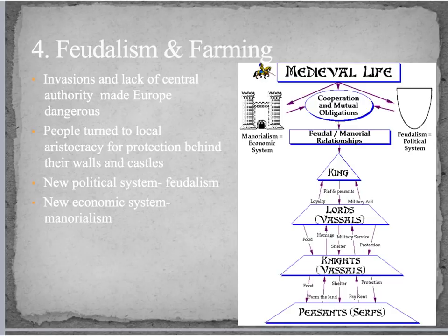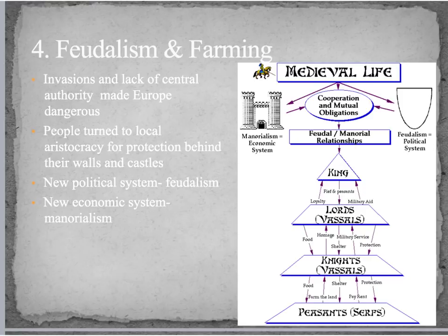Number four is feudalism and farming. Invasions and lack of central authority made Europe very dangerous — if the Vikings could come at any time and you have no military protection, you're living in a state of fear. So people turned to the local aristocracy for protection, because the local aristocracy usually lived on large estates with a castle or large home with walls around it. This led to a new political system called feudalism and a new economic system called manorialism.